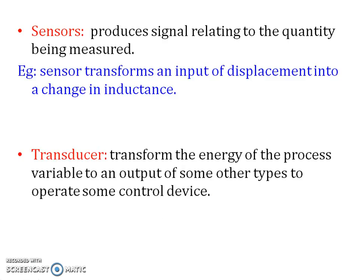Sensors produce a signal relating to the quantity being measured. For example, a sensor transforms an input of displacement into a change in inductance. Transducers, on the other hand, transform the energy of the process variable to an output of some other type to operate some control device.